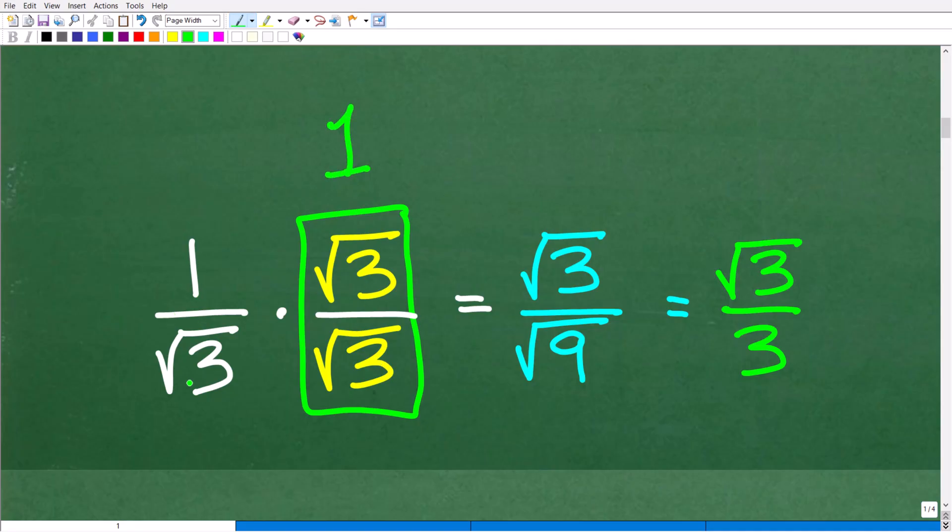So 1 over the square root of 3 times 1 is simply just 1 over the square root of 3. So we're not breaking or changing this fraction here, but we're using a trick so we can get rid of the square root in the denominator. And that's the objective. We want to get it out of the denominator, and we don't care if it's in the numerator. The problem is in the denominator.